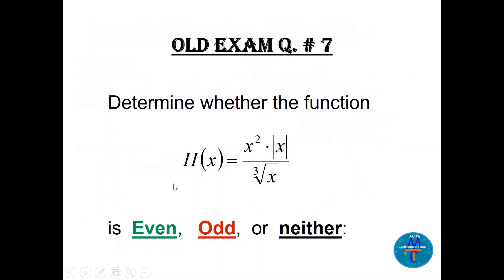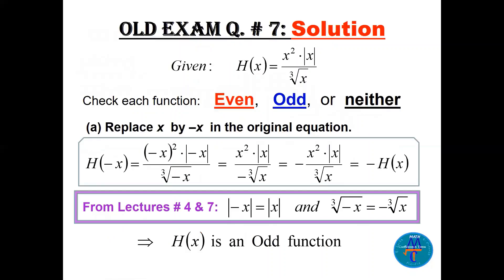Question seven: determine whether the function h(x) = x² · |x| / ∛x is even, odd, or neither. We replace x with −x: h(−x) = (−x)² · |−x| / ∛(−x). Since (−x)² = x², |−x| = |x|, and ∛(−x) = −∛x, the minus comes to the denominator. So h(−x) = −h(x), which means h is an odd function.